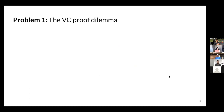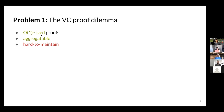The first problem I want to point to is what I'm calling the VC proof dilemma. By VC, I mean vector commitments like Merkle trees. There are two classes of VCs: one class has constant size proofs, which is great, and the proofs are aggregatable, which is even better. But these proofs are hard to maintain — inherently because they're constant-sized. When the vector changes, all proofs have to fully change, requiring order-N work to maintain all proofs in an updated state.